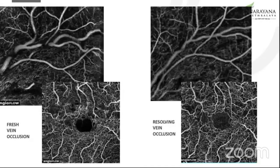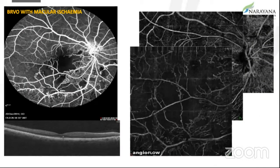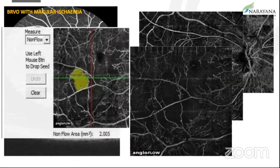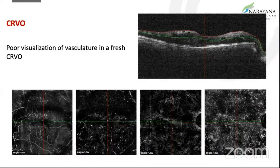This is a patient with fresh vein occlusion, as against resolving vein occlusion — you can see the tortuosity and dilatation of the vessels very well, and also resolution of the edema with treatment and time. Patients with BRVO and macular ischemia are so well delineated on OCTA and very comparable with dye-based angiography, and you can map out the area of non-perfusion. But because of edema in fresh CRVO, sometimes the vasculature may not be visualized. So we do get a lot of artifacts and poor fixation because the vision is so low.